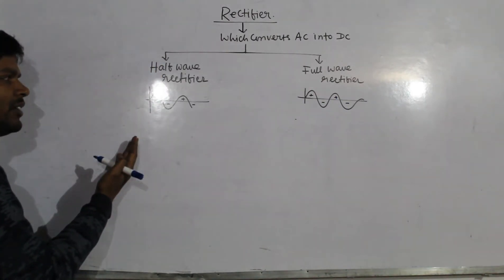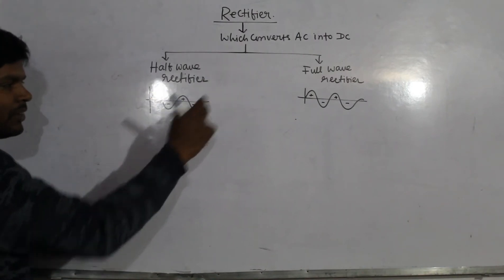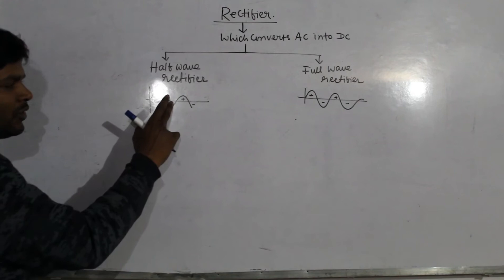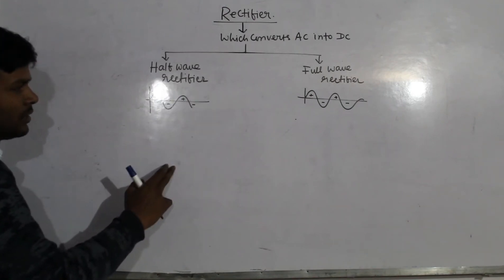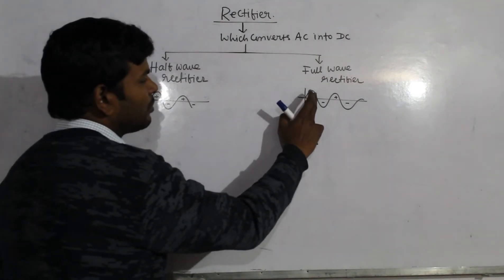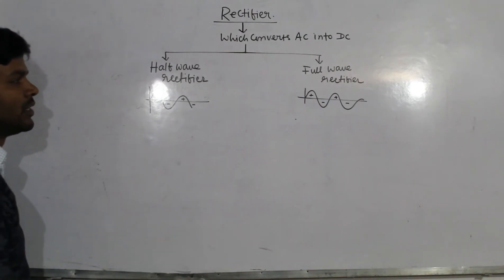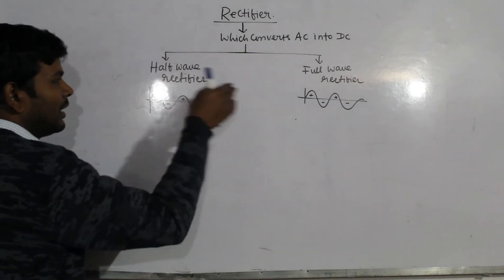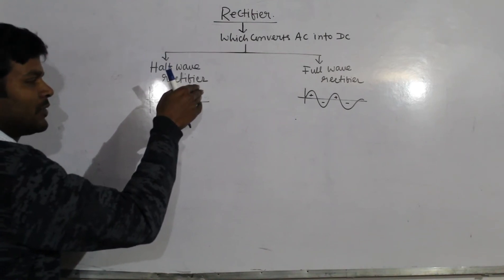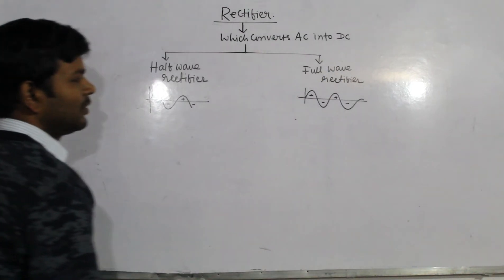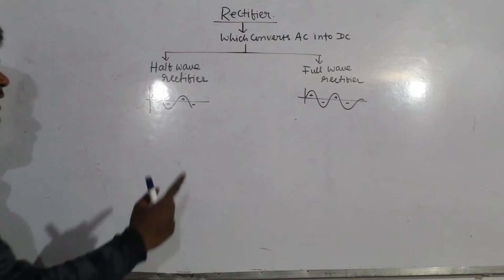In case of half-wave rectifier, when you input the positive cycle of input AC, that will be converted into DC. But in case of full-wave rectifier, both the positive cycle and negative cycle of input AC are converted into DC. That's why the names are half-wave rectifier and full-wave rectifier.